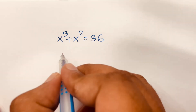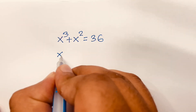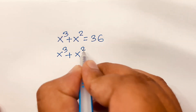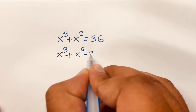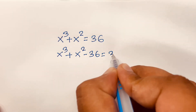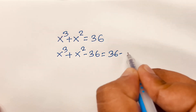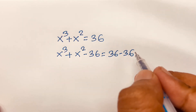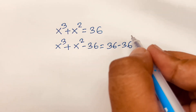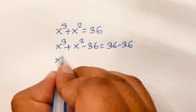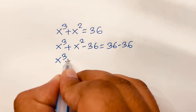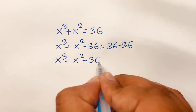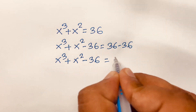First, I can say x to the power 3 plus x squared minus 36 is equal to 36 minus 36. I just subtract 36 from both sides. Then x to the power 3 plus x squared minus 36 is equal to 0.